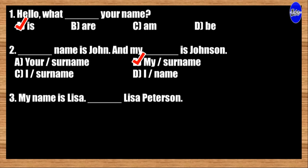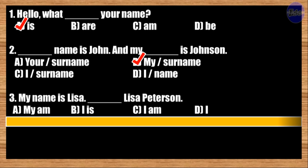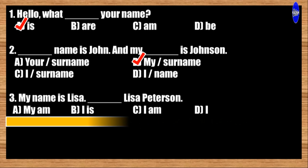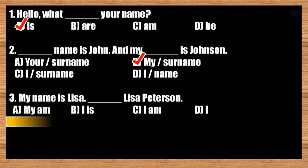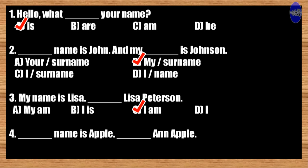Number three: My name is Lisa, blank Lisa Peterson. A: my am; B: I is; C: I am; D: I. The correct answer is option C. My name is Lisa, I am Lisa Peterson.